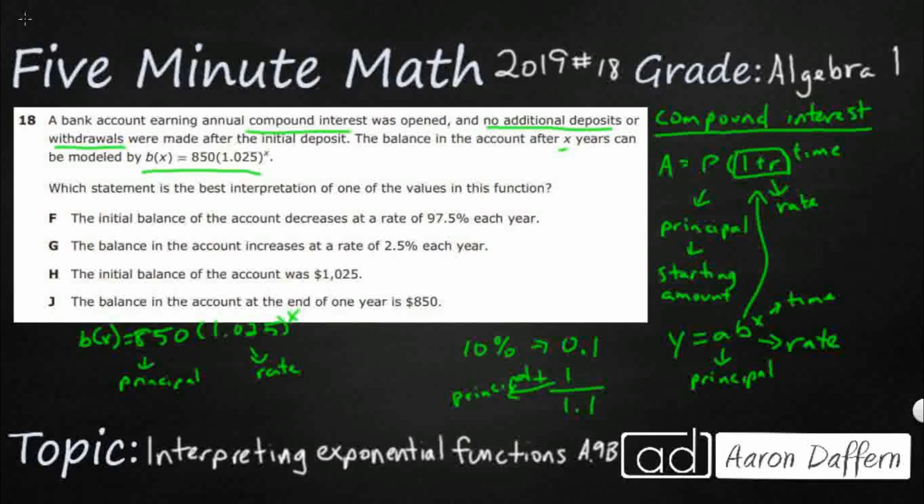So what we need here is we need to first subtract the 1 from 1.025 to calculate the rate. And then we need to make that into a percent. Move it over twice. So 2.5% is your interest rate. And then the x is just the number of years. That's a time period.